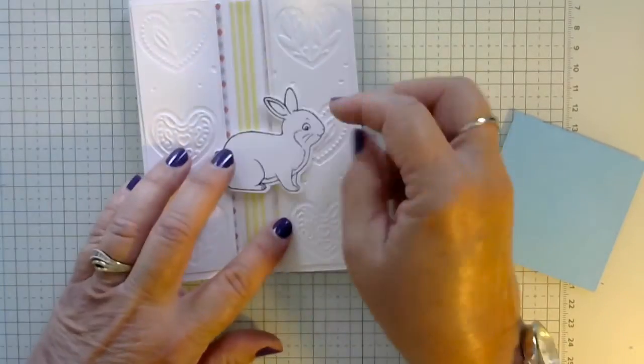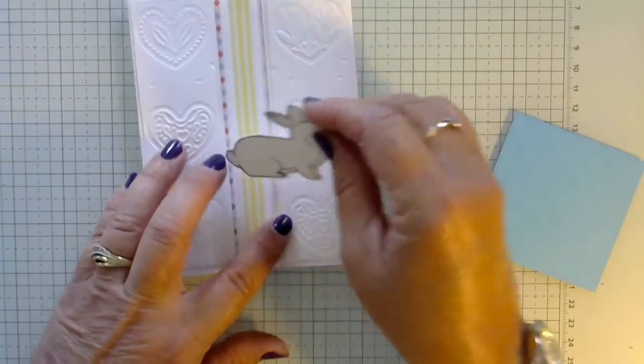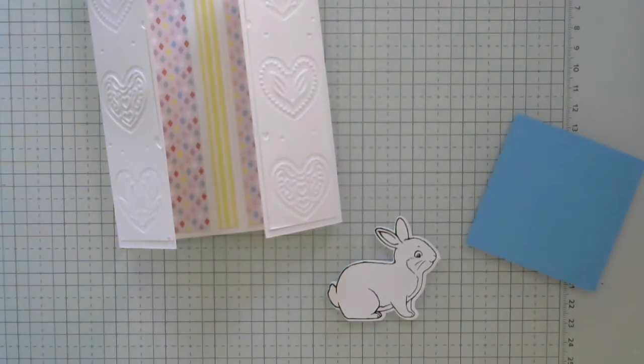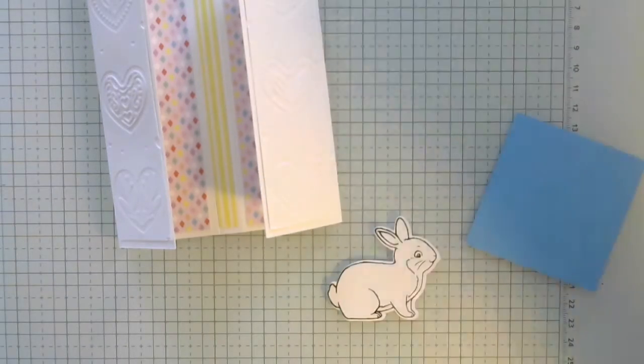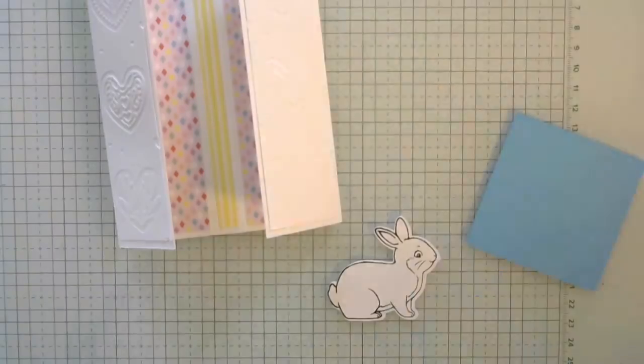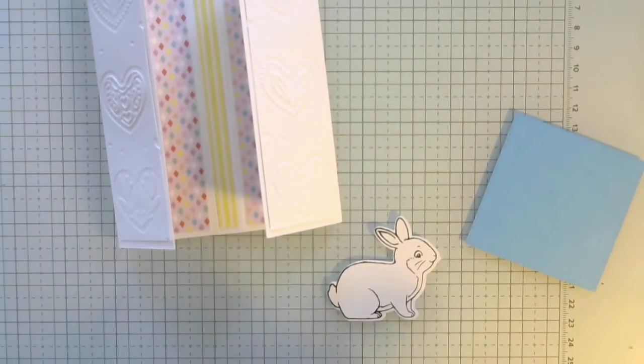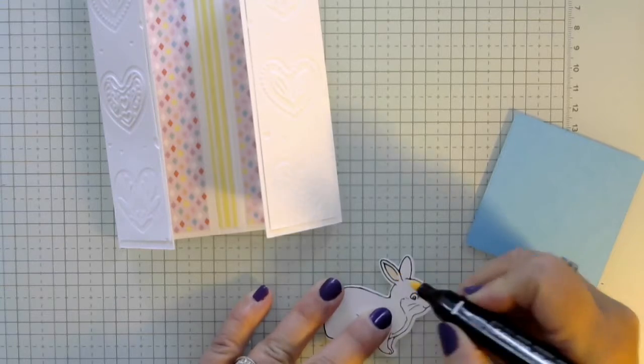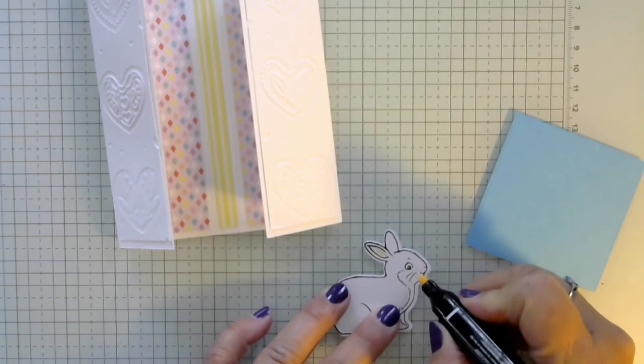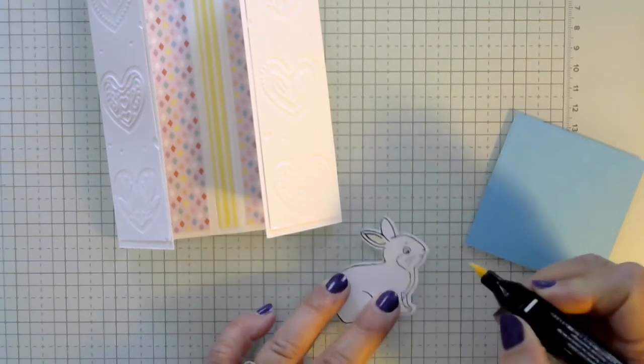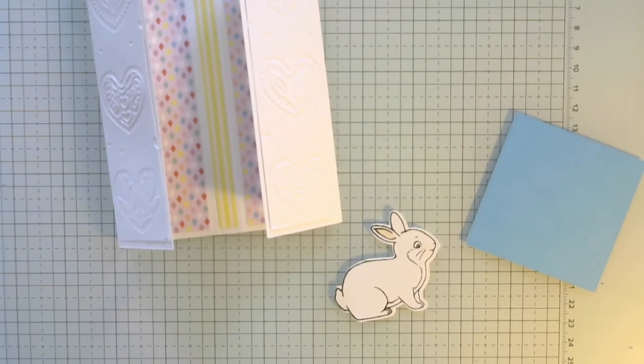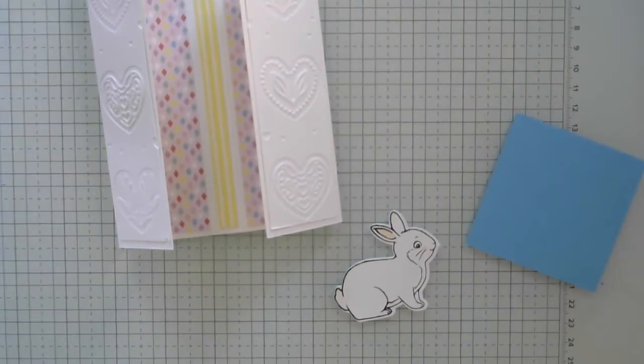Now if you wanted, you could put a little pink in his ears and his nose. Maybe we should do that. Here's some light petal pink. And let's just give him a little bit in his ear and his nose. Where would a bunny's cheeks be? Maybe a little bit right there. Just a little hint of color.